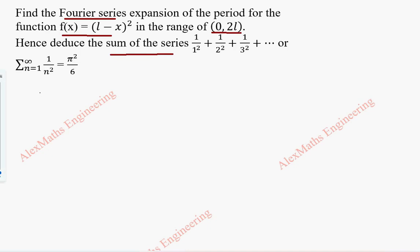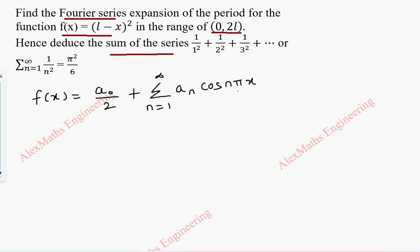As a first part we are going to write the formula for the Fourier series expansion, which is f(x) = a0/2 plus summation n=1 to infinity of a_n cos(nπx/L) plus summation n=1 to infinity of b_n sin(nπx/L).